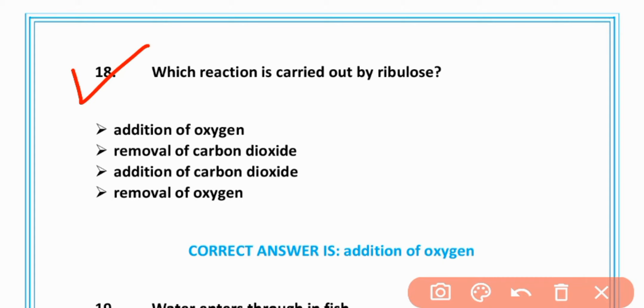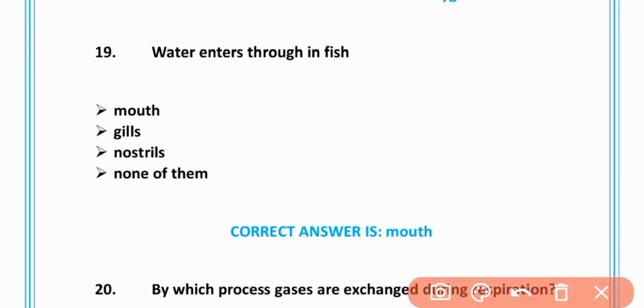MCQ number 18: Which reaction is carried out by Rubisco? Addition of oxygen, A is correct. MCQ number 19: Water enters through in fish? Mouth, option A is correct.